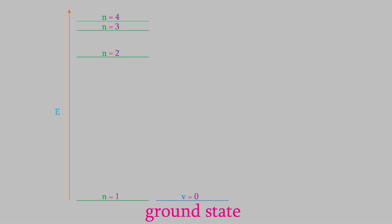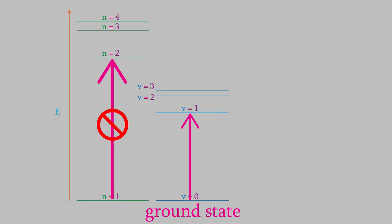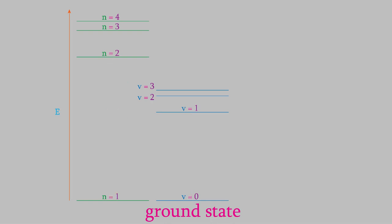It turns out that each of the electronic energy levels has a set of vibrational energy levels associated with it. For example, if our molecule is in the ground state electronic level, we can add a little energy and excite the vibration into a higher state — much less energy than needed to reach n=2. Just like the electronic energy levels, the vibrational levels get closer and closer together as we raise the energy. Each electronic energy level has its own set of vibrational levels, so the diagram starts to look fairly complicated.